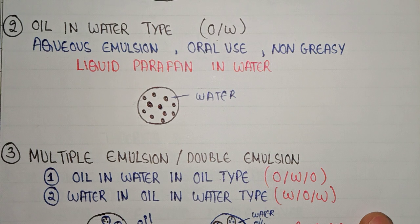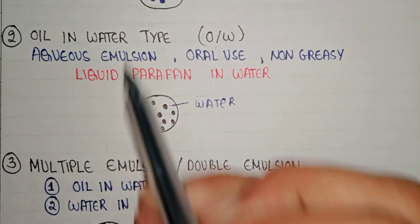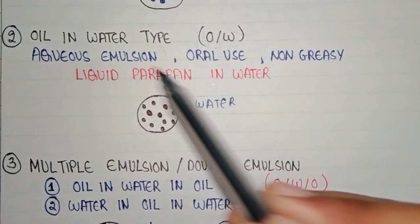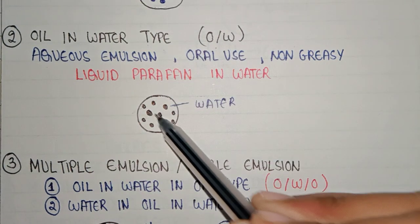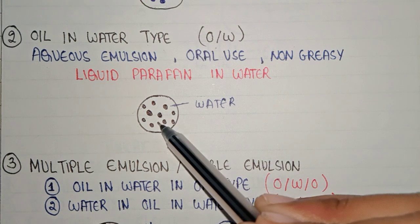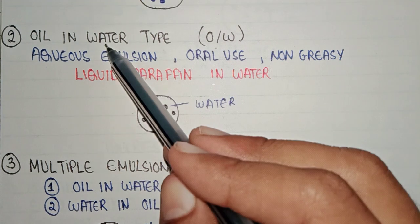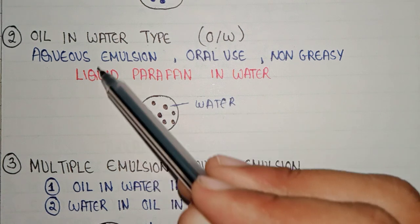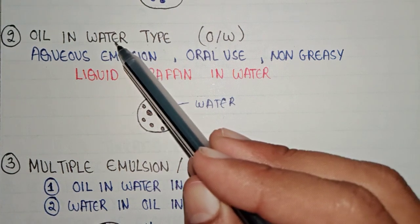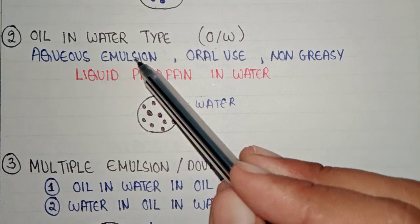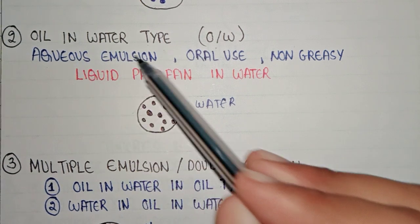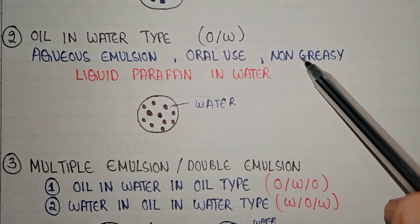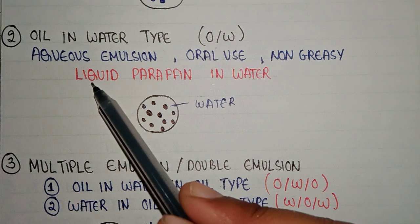The second type is oil-in-water emulsion. In this type, oil is the dispersed phase, scattered in the form of droplets as shown in the diagram, and water is the dispersed medium. Since water is the dispersed medium, this emulsion has aqueous properties and is also known as aqueous emulsion.